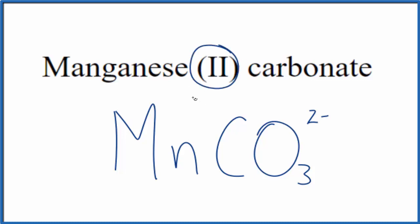Manganese tells us right here, this Roman numeral II, that's 2 plus. And since this is a neutral compound, we don't have the word ion after it. These charges need to add up to zero, give us a net charge of zero.